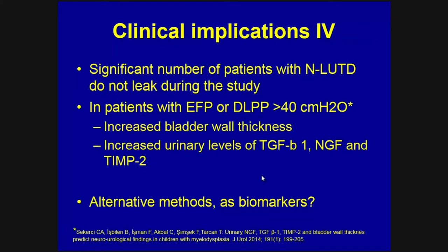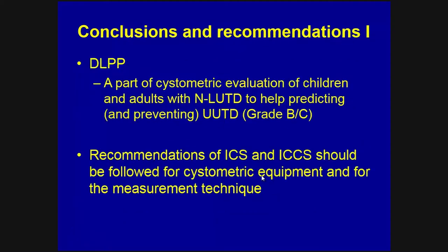Significant numbers of patients with neurogenic lower urinary tract dysfunction do not leak during the study, where end-filling pressure should be noted. One study showed increased bladder wall thickness and increased urinary levels of TGF-beta-1, NGF, and TIMP. These biomarkers are very promising for the future, potentially replacing some of the urodynamic parameters used today. DLPP, as part of systematic evaluation of children and adults with neurogenic lower urinary tract dysfunction to help predict or prevent upper urinary tract dysfunction, has been recommended with a grade of B or C as a result of our teaching module.